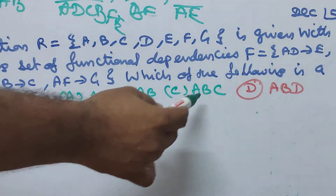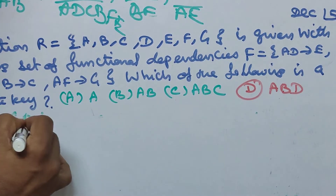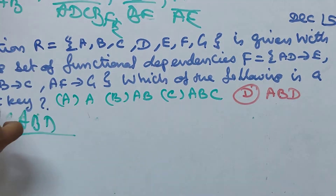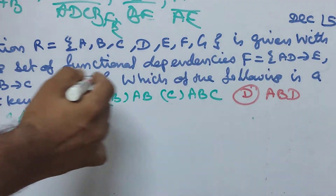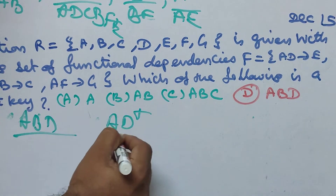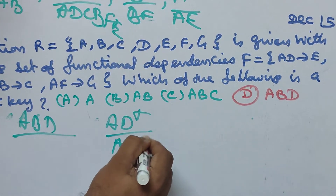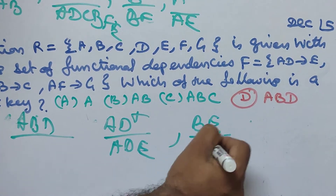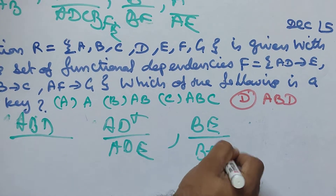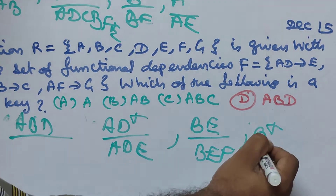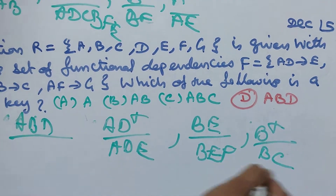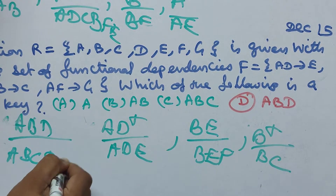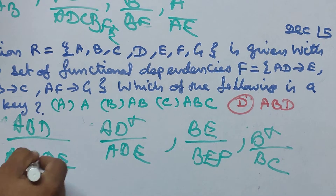So we will look at the closure of A, B, C. A, B, D closure: A, D implies C so we get A, B, D, C. B implies F, so B closure gives B, F. This gives A, B, C, D.